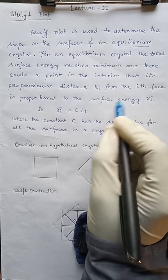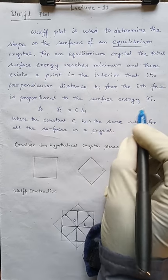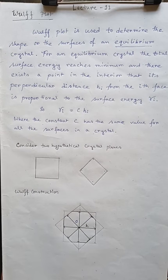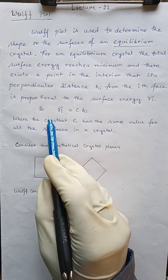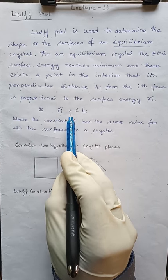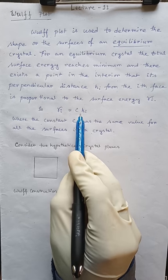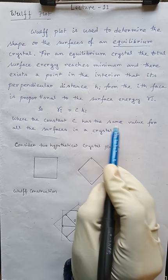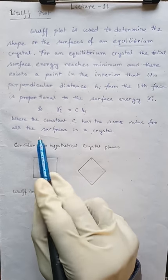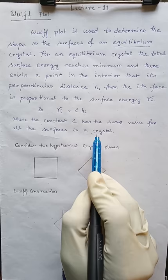So this is proportional to the surface energy of that surface, which is gamma_i. For that we get gamma_i is equal to C into h_i, where the constant C has the same value for all the surfaces in a crystal.